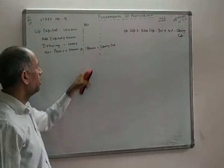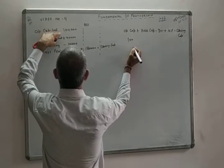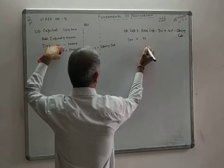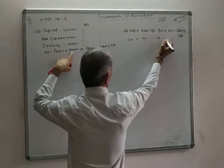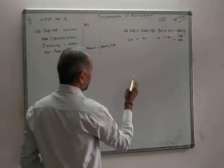Additional capital is added, and drawings are deducted, while profit is added. So the equation is: Opening capital ₹1 lakh + Additional capital ₹40,000 − Drawing ₹10,000 + Profit ₹50,000 = Closing capital ₹1,80,000.